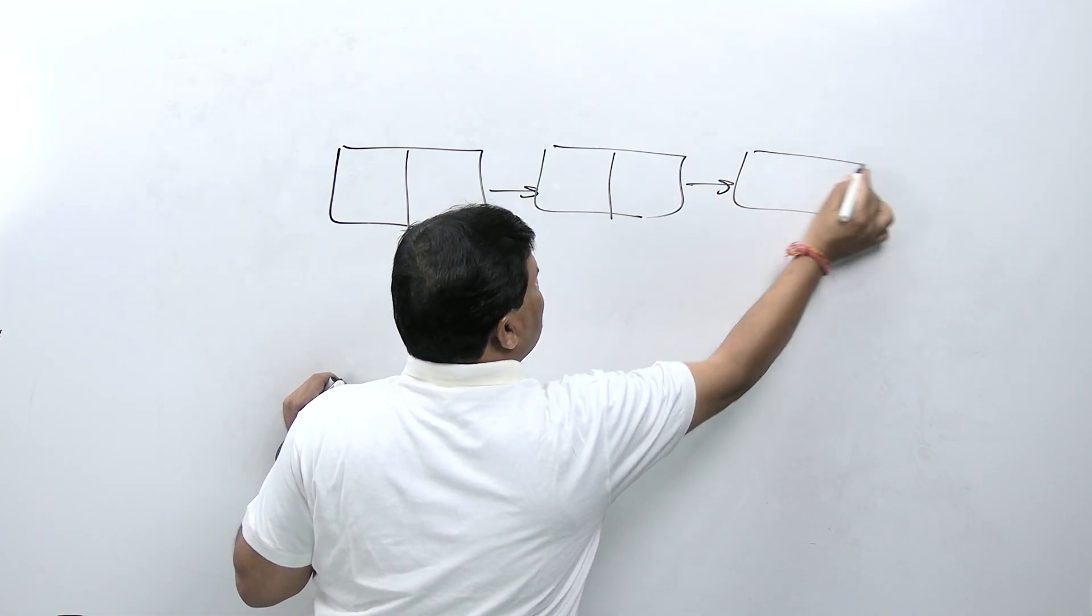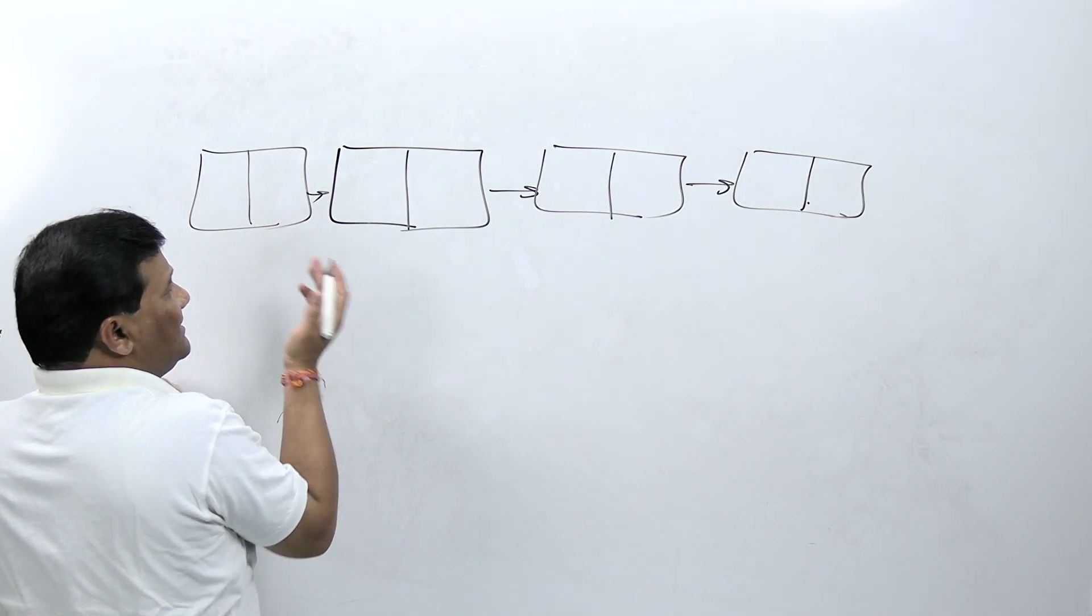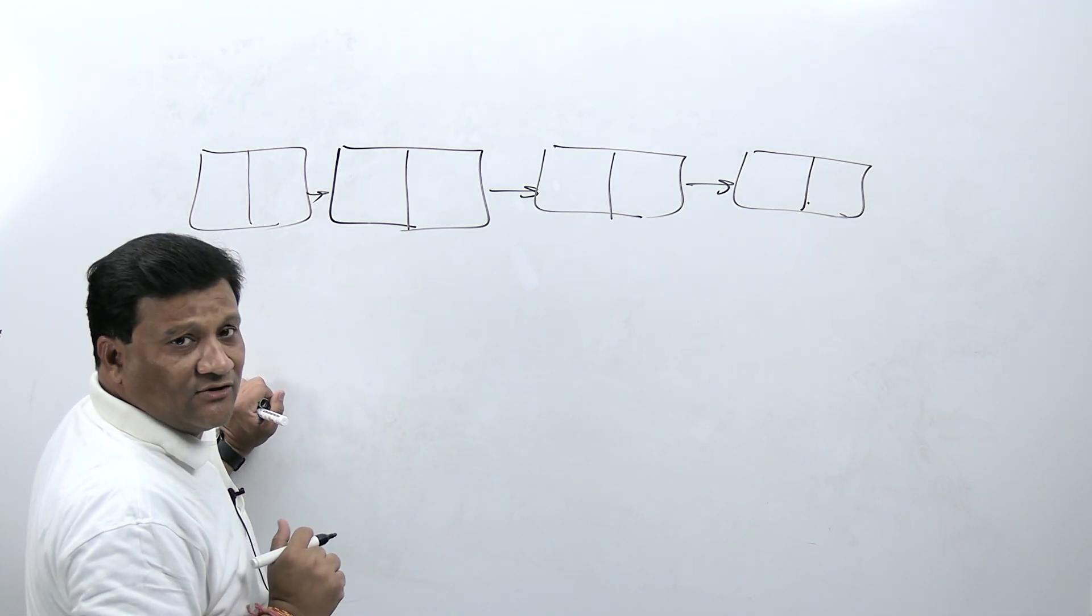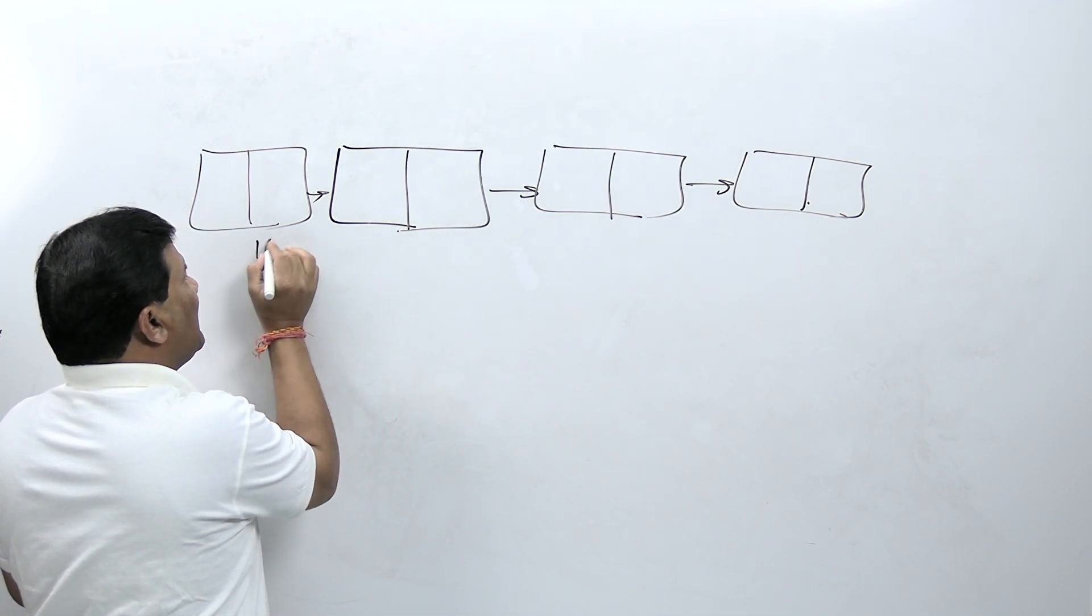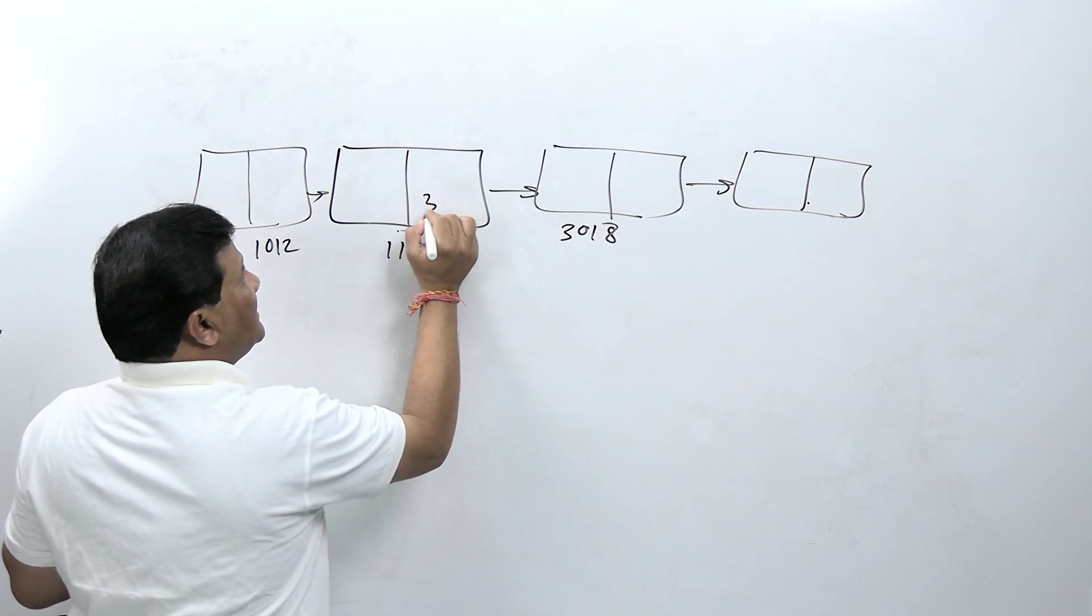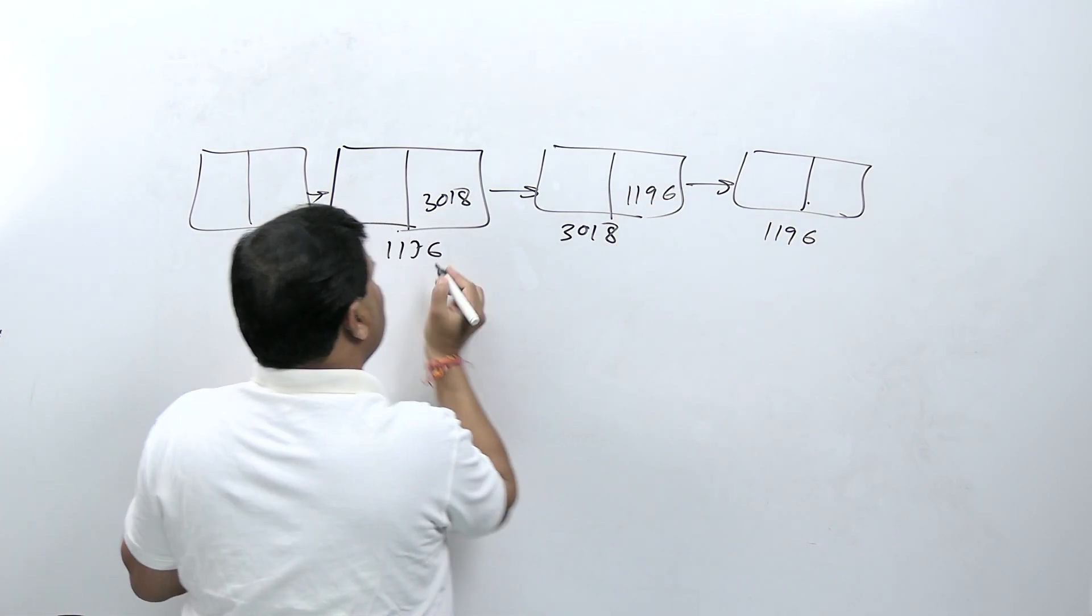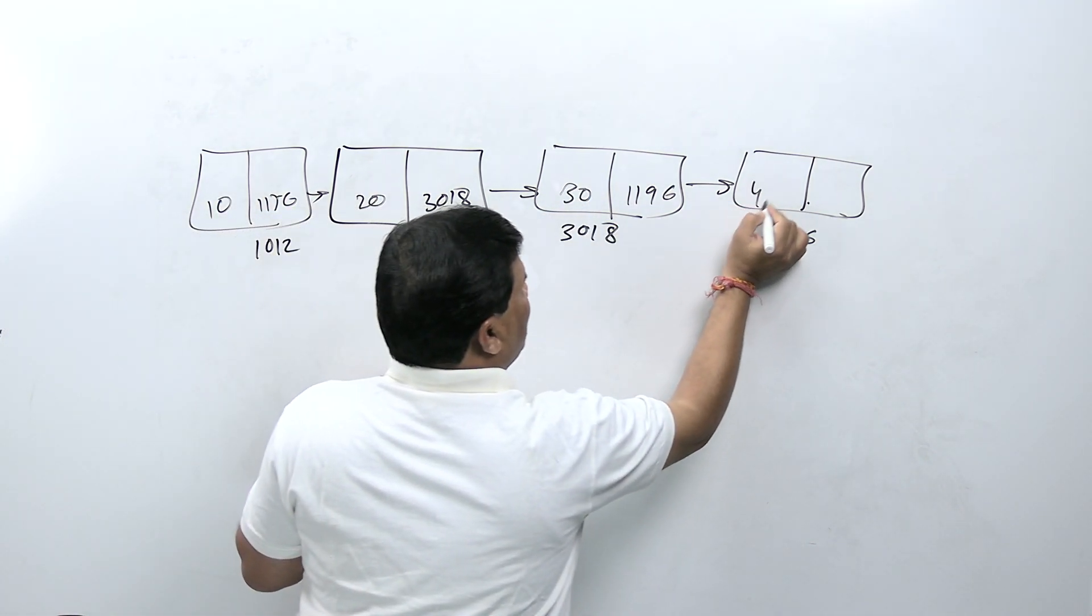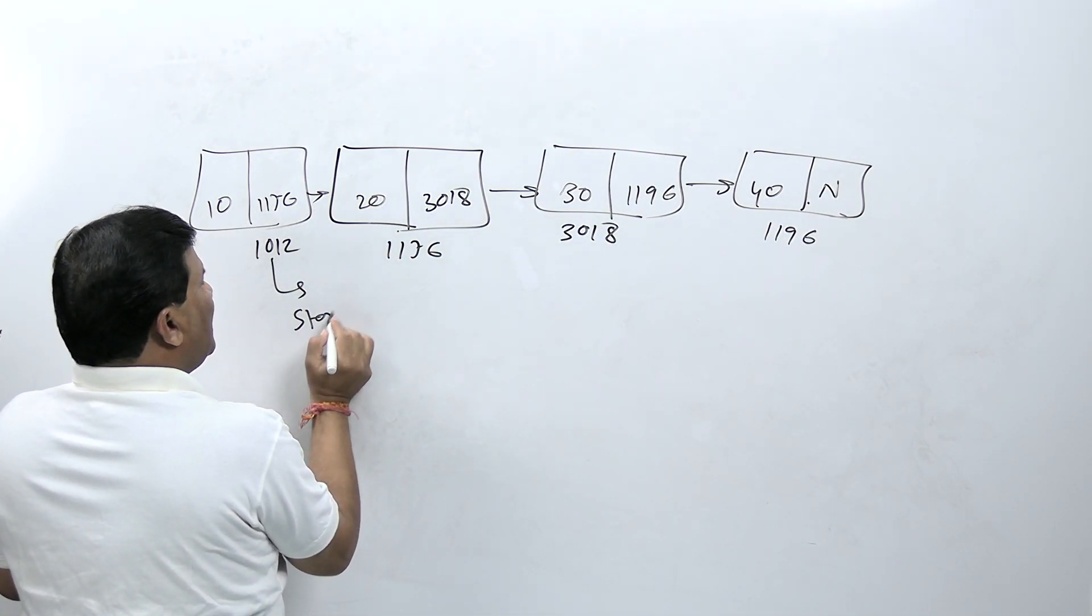Traversing problem means suppose you have a single linked list. This list consists only four nodes, but consider if this list has thousands of nodes. Suppose a pointer is at this position, address 7012, this is 1176, this is 3018, this node consists 3018, suppose this is 1196, this node consists 1196, and this is 1176.